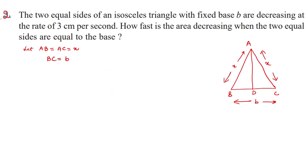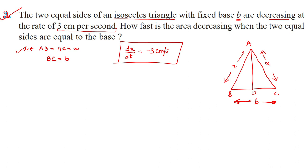Question 2: An isosceles triangle has a fixed base b, and the two equal sides of length x are decreasing at 3 cm per second. So dx/dt = −3 cm/s. We need to find how fast the area is decreasing — that is, find dA/dt — when the two equal sides are equal to the base, i.e., when x = b.